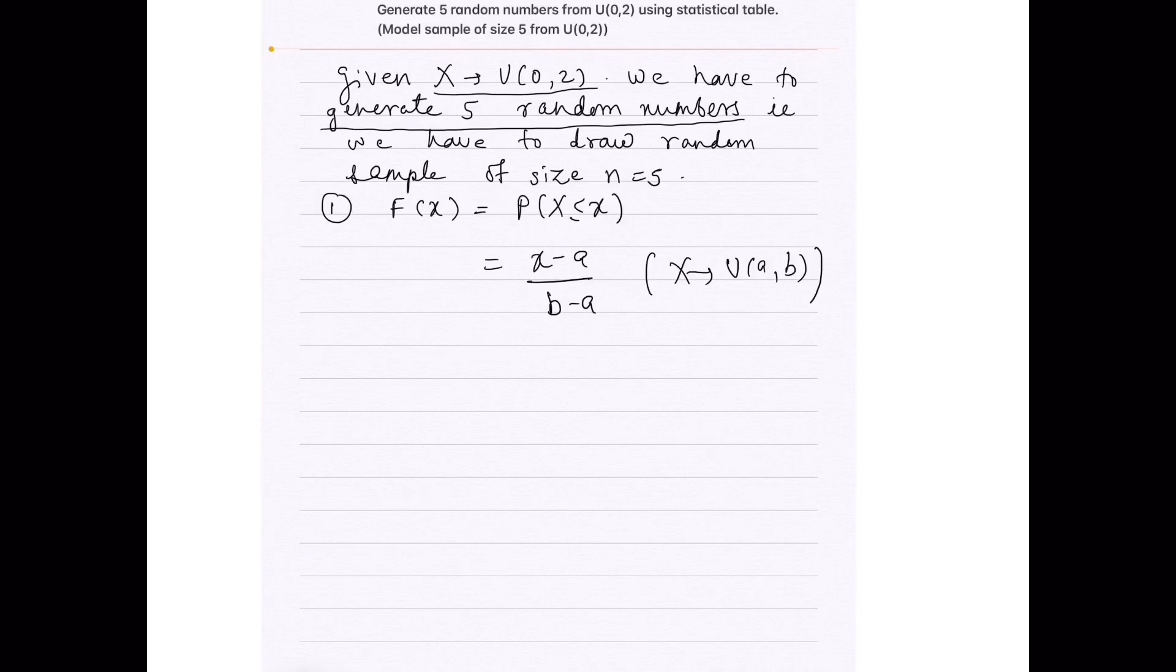Now, here in our case a is 0 and b is 2. Let us continue writing this in the form of x when F(x) equals (x minus a) upon (b minus a). Therefore, x minus a equals (b minus a) into F(x). Hence, we get x, the general formula for x as a plus (b minus a) into F(x).